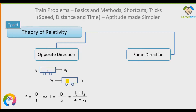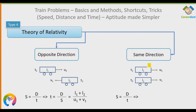For trains moving in the same direction: T = (L1 + L2) / (U1 − V1). We subtract the speeds because if both trains are moving at the same speed — say 60 km/h each — you would feel that neither train is moving. That's because 60 − 60 = 0. So speeds are subtracted for trains going in the same direction.